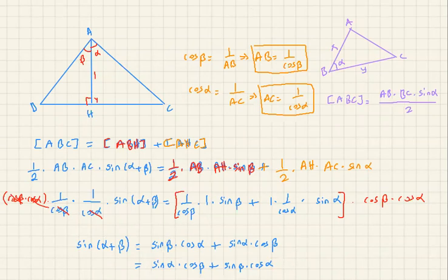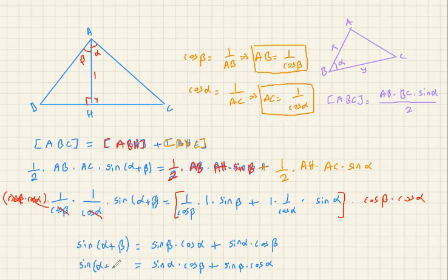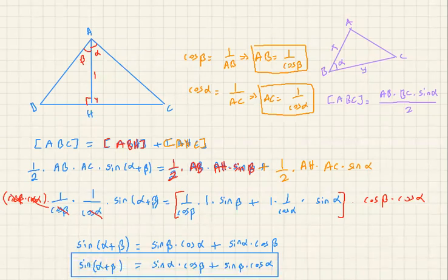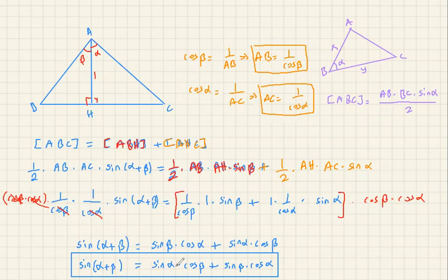So I'll rewrite this neatly: sine of alpha plus beta equals sine alpha times cosine beta plus sine beta times cosine alpha. This is the identity I want you to remember — not by memorizing but by going through this derivation a few times on your own until you feel comfortable with the process. This is one of the most important identities in trigonometry, and it will serve as one of your foundations.